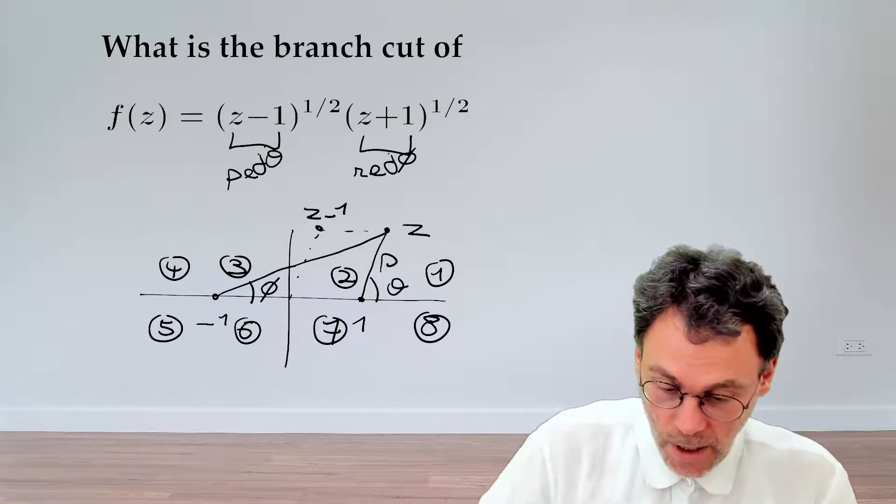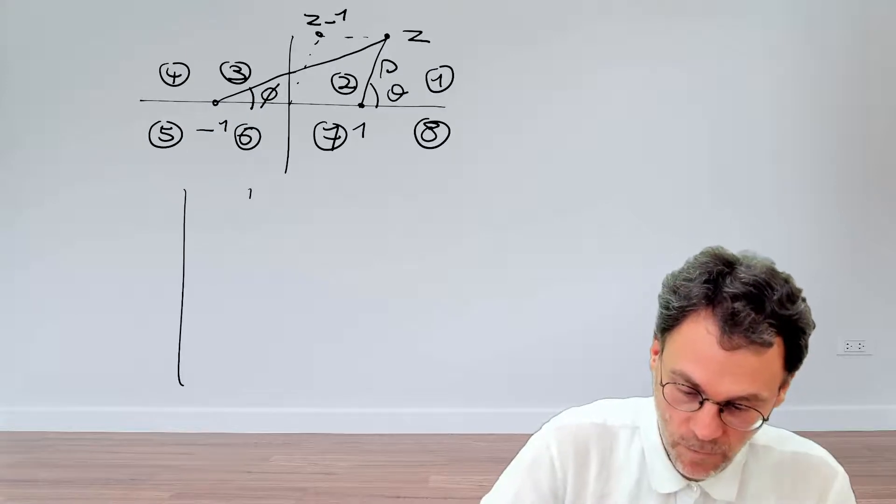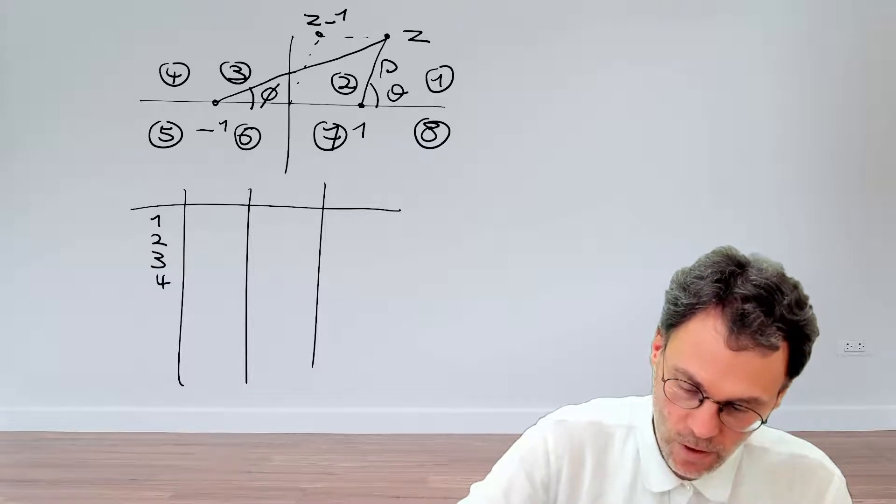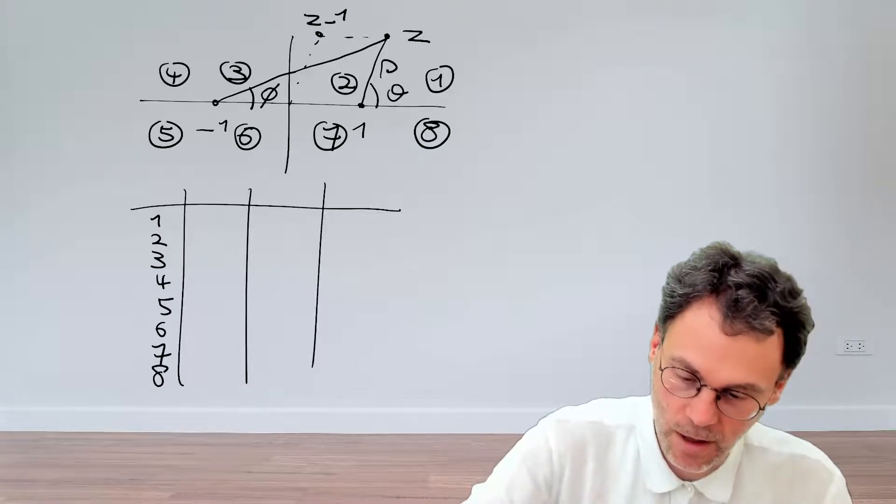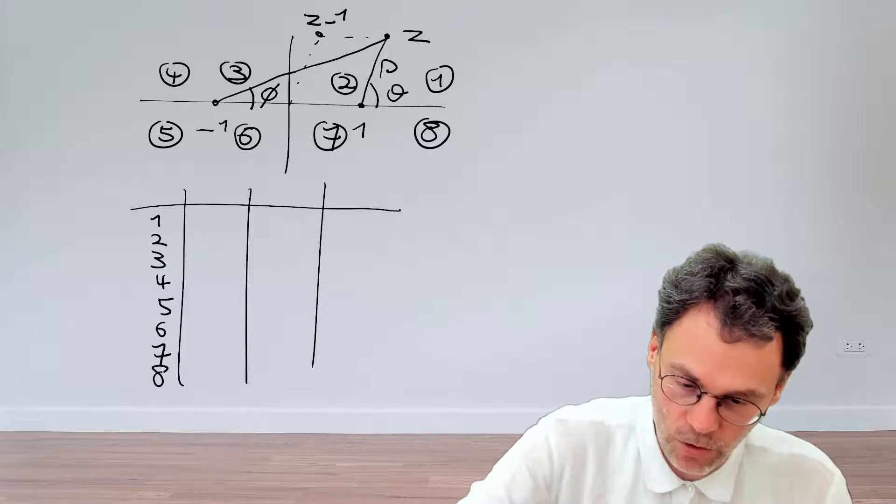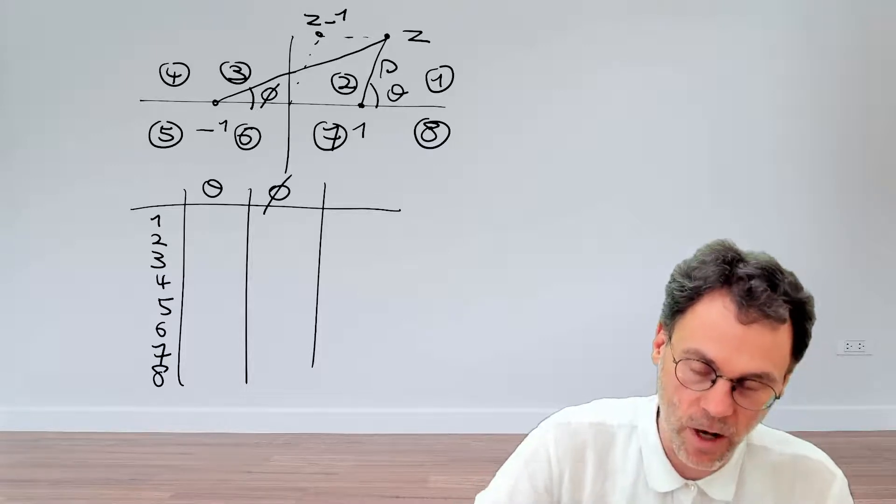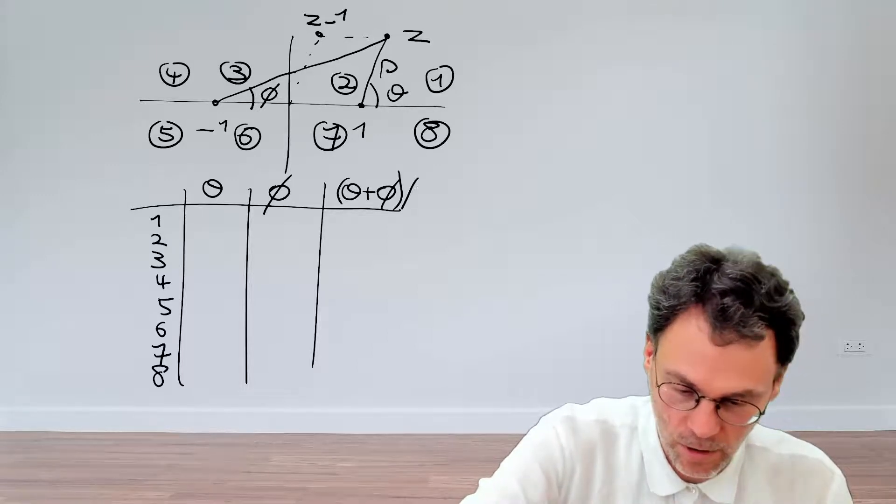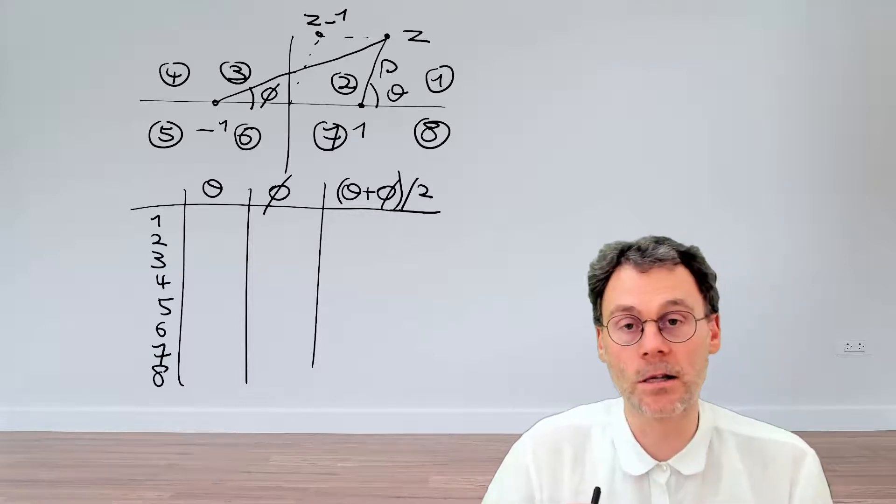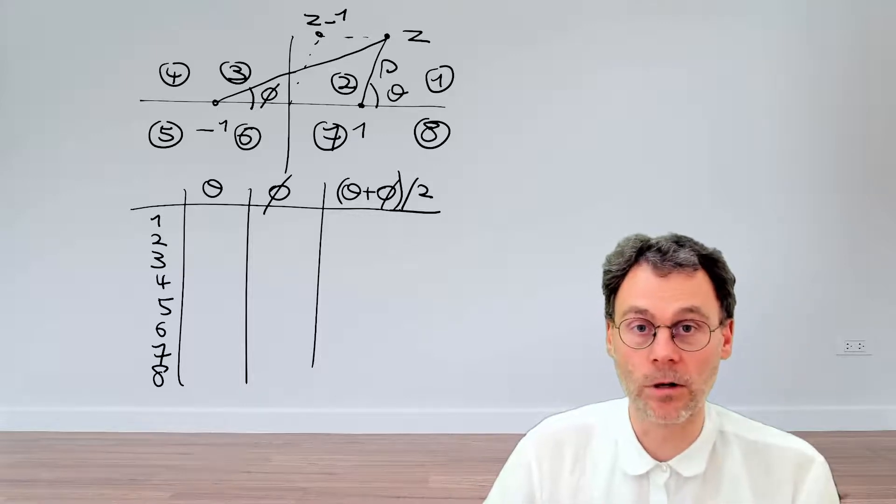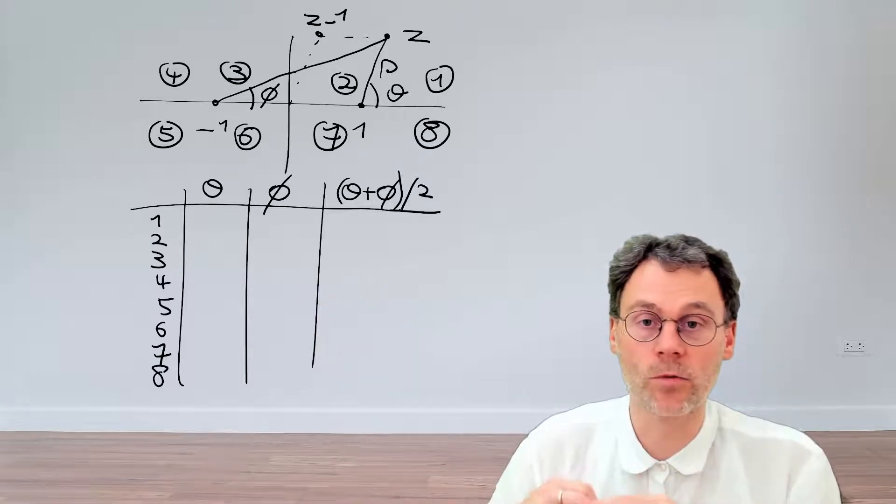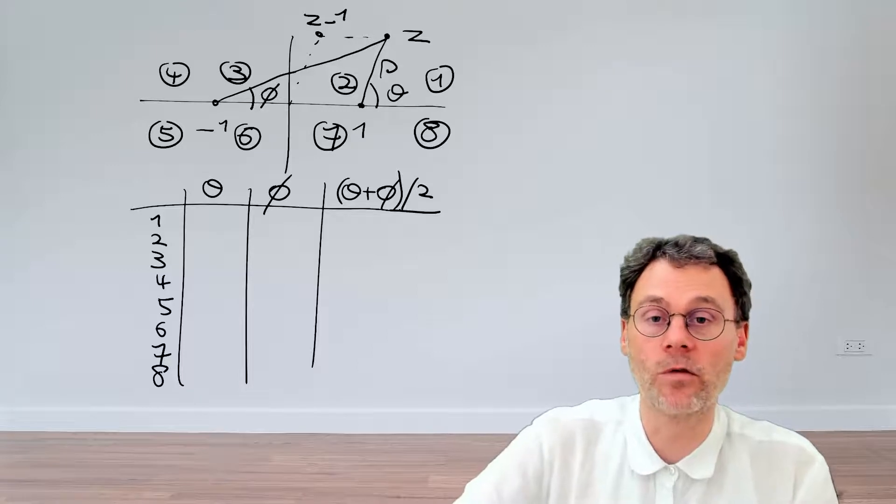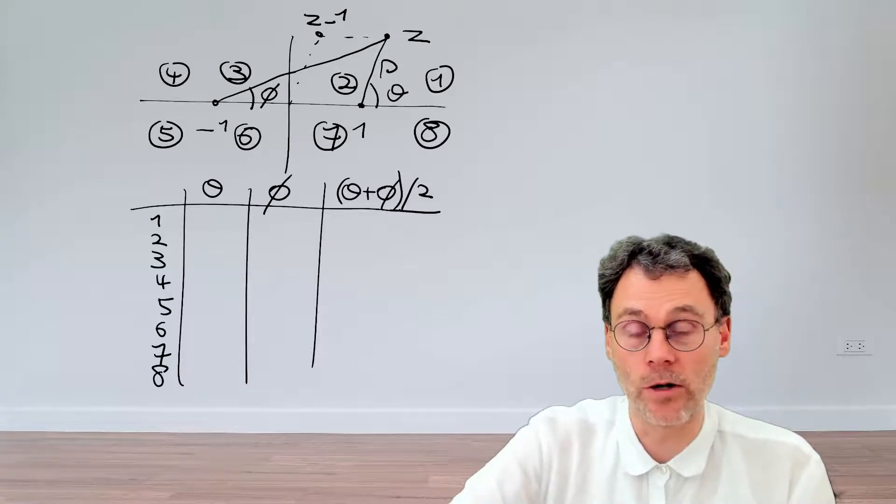So what I'd like you to do now is fill in a table for each of these points. So we have location 1, 2, 3, 4, and then 5, 6, 7, and 8. Figure out for each of these points what we should fill in for theta and phi. And then the final step in our recipe to calculate the result of our function is just adding these angles and dividing them by 2. And that will allow us to figure out where we will have phase jumps where we will pick up factors of minus 1.